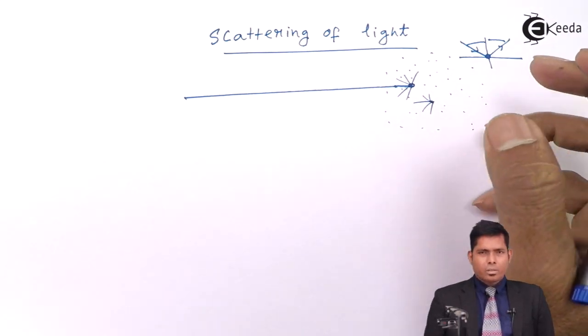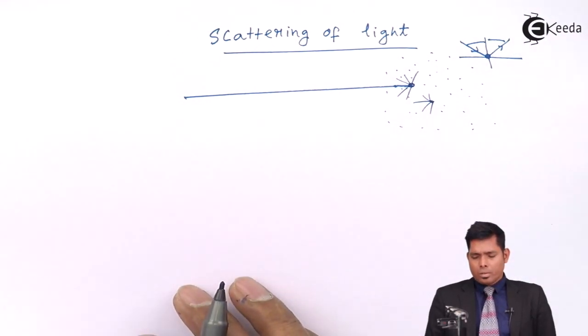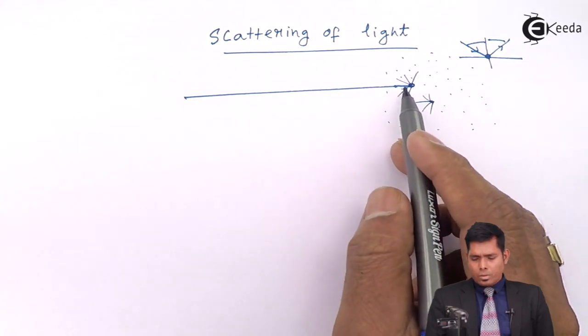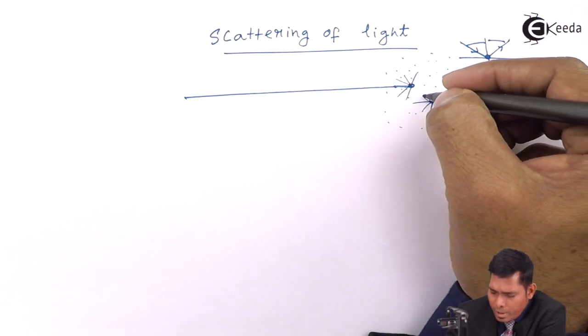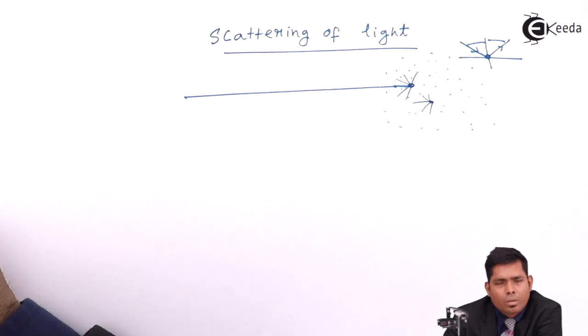So this scattering of light gives rise to various phenomena which we can explain, such as why the sky appears blue, why during sunrise and sunset the sun appears to be red, and such questions we can answer.